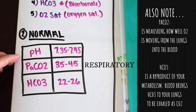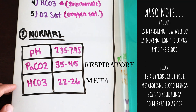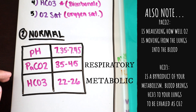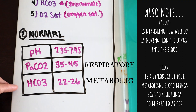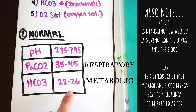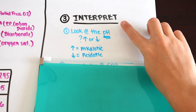Now HCO3 is your bicarb — think of your metabolism. Your metabolism is much slower than how fast you can breathe. PaCO2 is your carbon dioxide related to breathing, while HCO3 is your bicarb tied to metabolism. Because metabolism is slower, those numbers are lower.